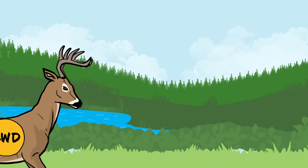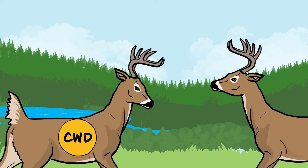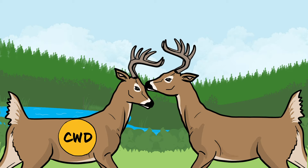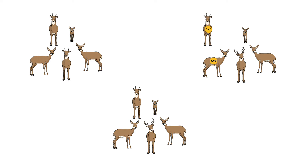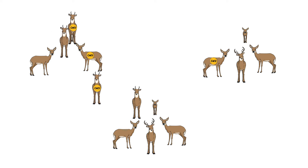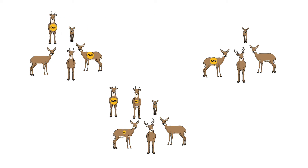Prions can be spread through contact between individuals, such as during mutual grooming within family or buck bachelor groups, or from interactions during the breeding season, or dispersal of young males which may spread prions among different groups of deer.